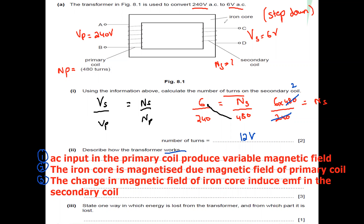In addition, you can mention that the output voltage can be stepped up or stepped down by using a suitable turns ratio. Then the question asks to state one way in which energy is lost from a transformer — it is mainly lost in the form of heat, from the core or the coils.